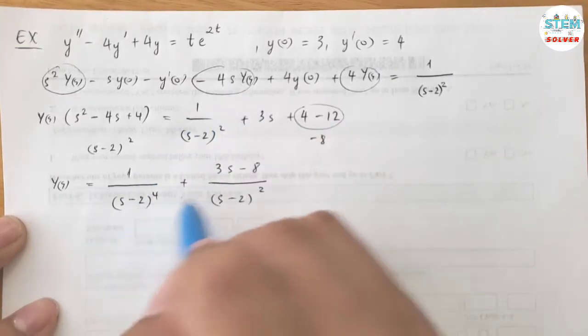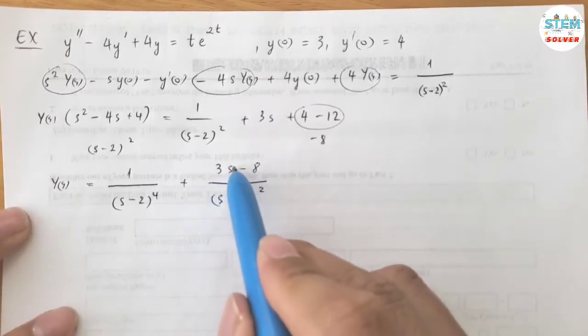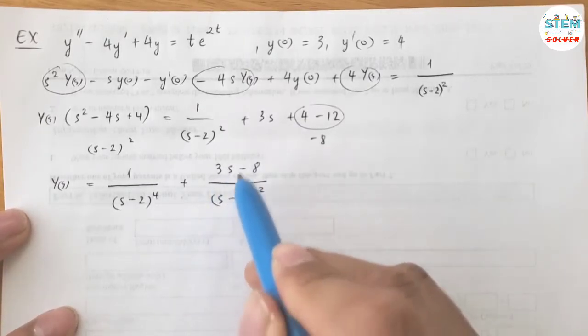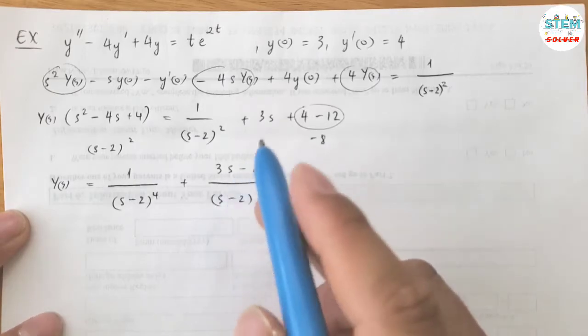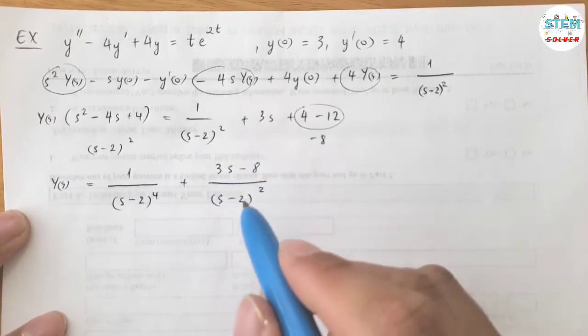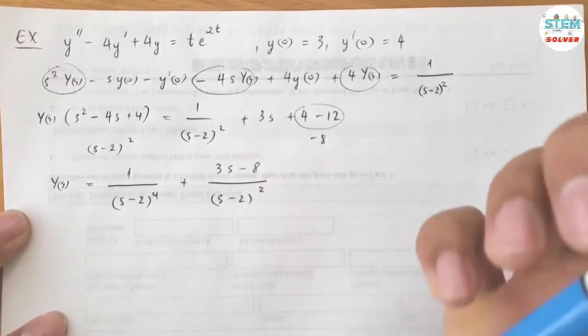For this one we're okay, but for this one we need to make the top look the same, because otherwise we are not going to be able to find the inverse. So how? So what I'm going to do, let me use a different color here.